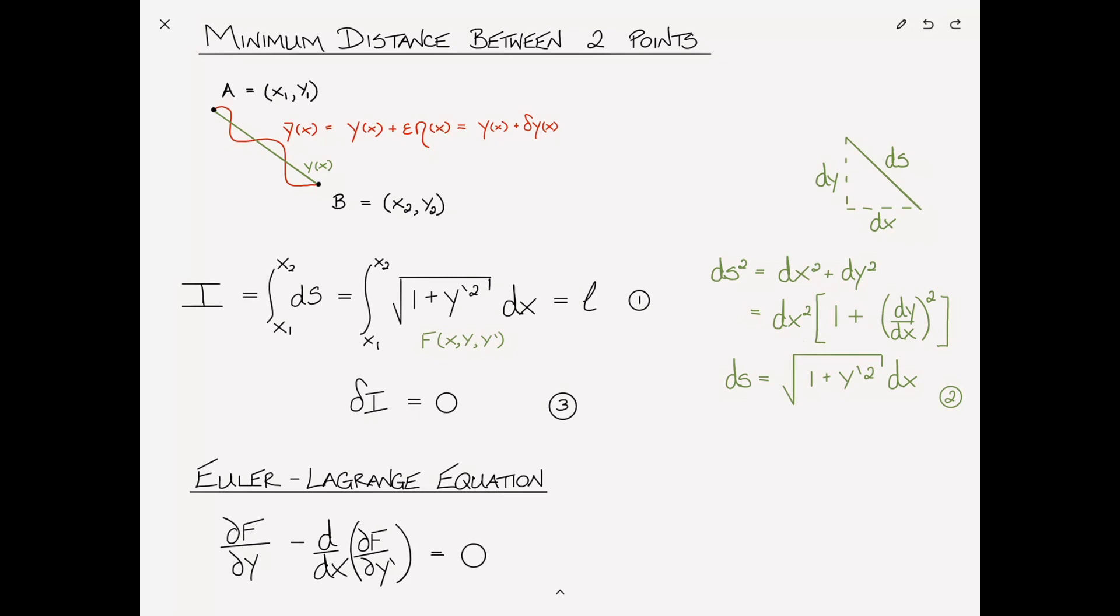In that case, this first term df/dy becomes zero. And the remaining term d/dx of ∂f/∂y' implies if we integrate that with respect to x yields ∂f/∂y' is equal to a constant. Let's give these some numbers, four and five.